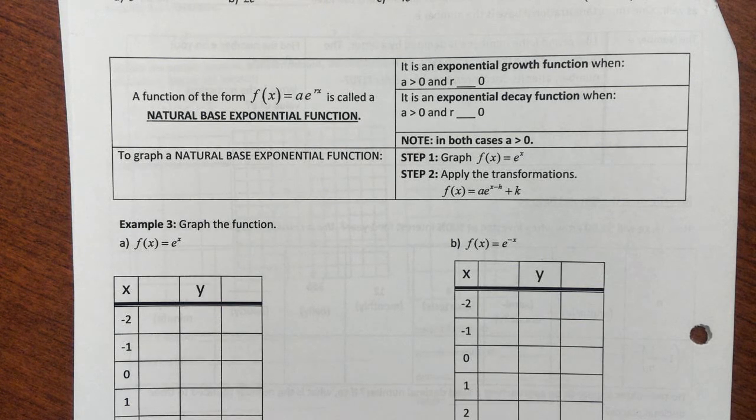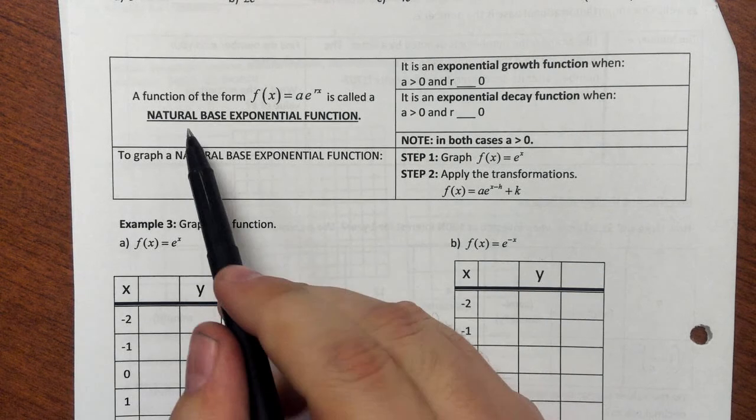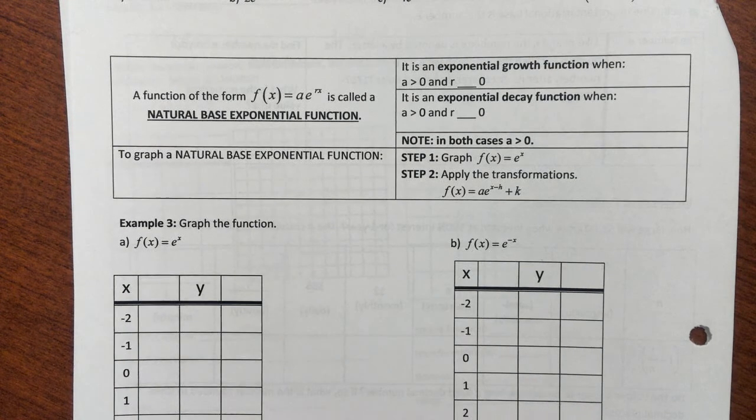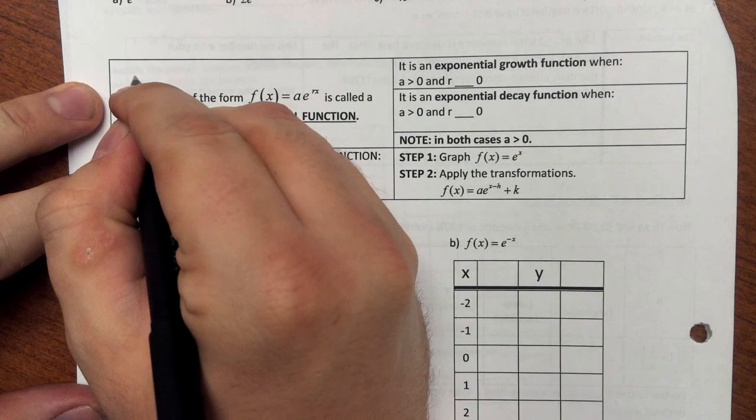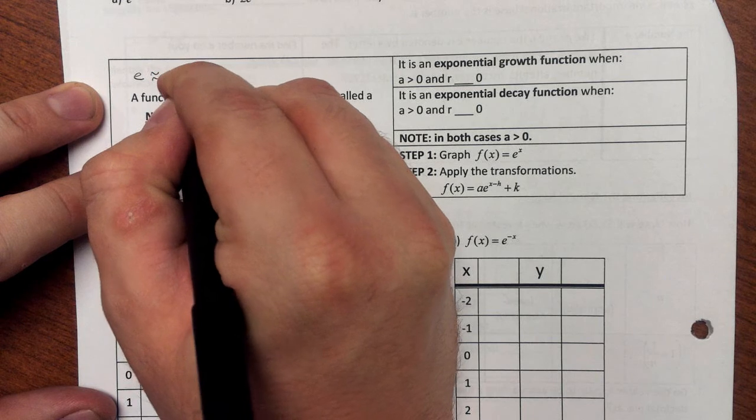Alright, so I want to take a look at how to graph exponential functions with a base of e, or what we would say, natural base exponential functions. So first off, we have to remember, we have to know that e is approximately 2.718.